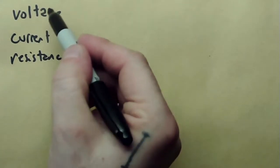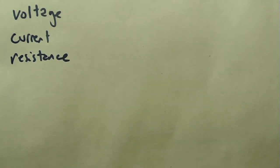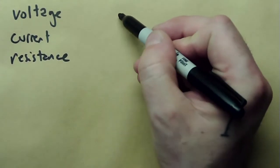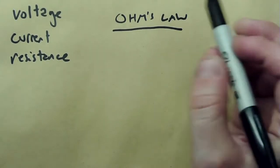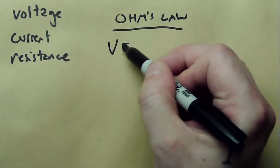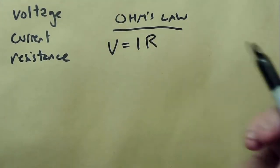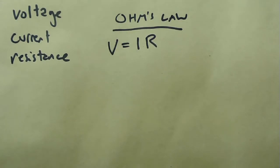So these three characteristics of electricity are all interrelated using something called Ohm's Law. And Ohm's Law states that voltage is equal to current times resistance within a circuit. Now we haven't covered what these things really mean, so we're going to talk about them using some metaphorical language. Specifically, we're going to talk about them using water.